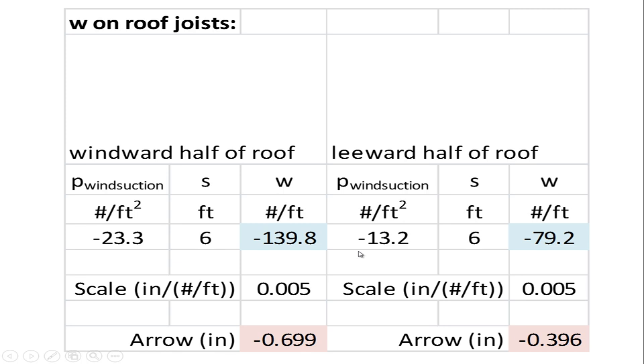On the leeward side of the roof, we had a lower suction, but we multiply that times S and we get W. So if the joists went all the way across the roof, we would analyze them to have this load on the half of the roof that's on the windward side, and this load on the other side or the leeward side.